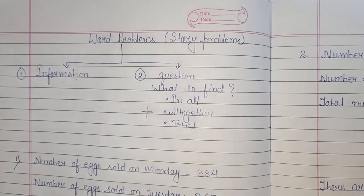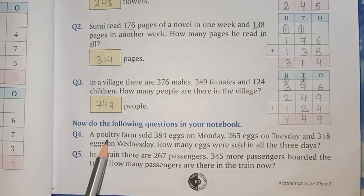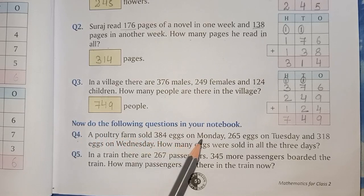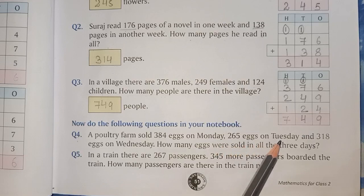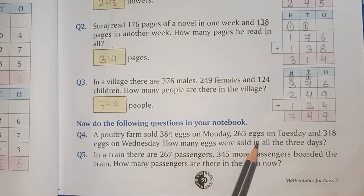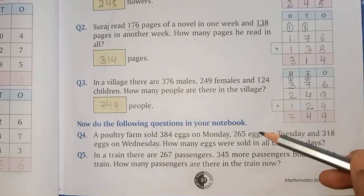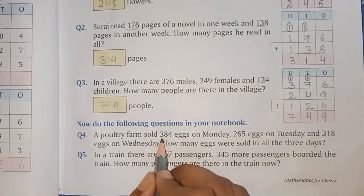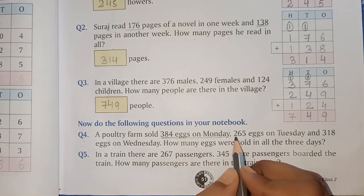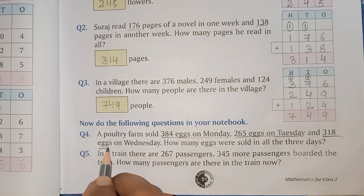Now see the question first. Turn to page number 51, children, and see question number 4. A poultry farm sold 384 eggs on Monday, 265 eggs on Tuesday, and 318 eggs on Wednesday. How many eggs were sold in all 3 days? So now here we have to find the information we are getting from the question. The first information is number of eggs sold on Monday, the second is number of eggs sold on Tuesday, and the third is number of eggs sold on Wednesday.